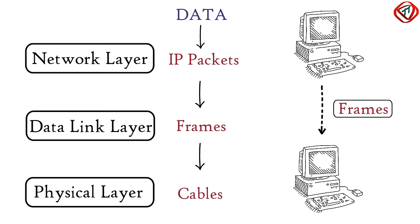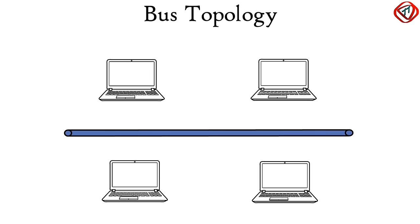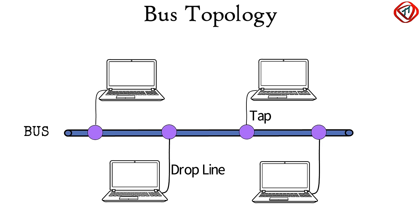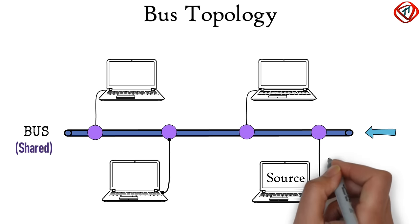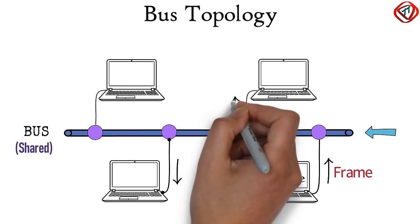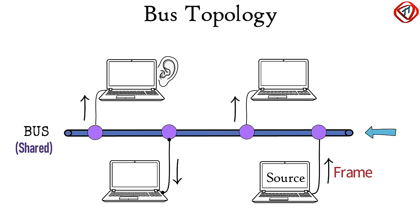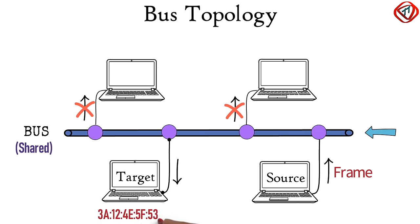In a bus topology, computers connect to a shared central cable called a bus with taps and droplines. Shared means that all connected computers use the same cable for data frame transmission. Taps are the connectors and droplines are the cables running between computers and the bus. If a computer sends data frames to a second computer, all computers connected to the same central cable also receive the frame. However, only the target computer accepts it.